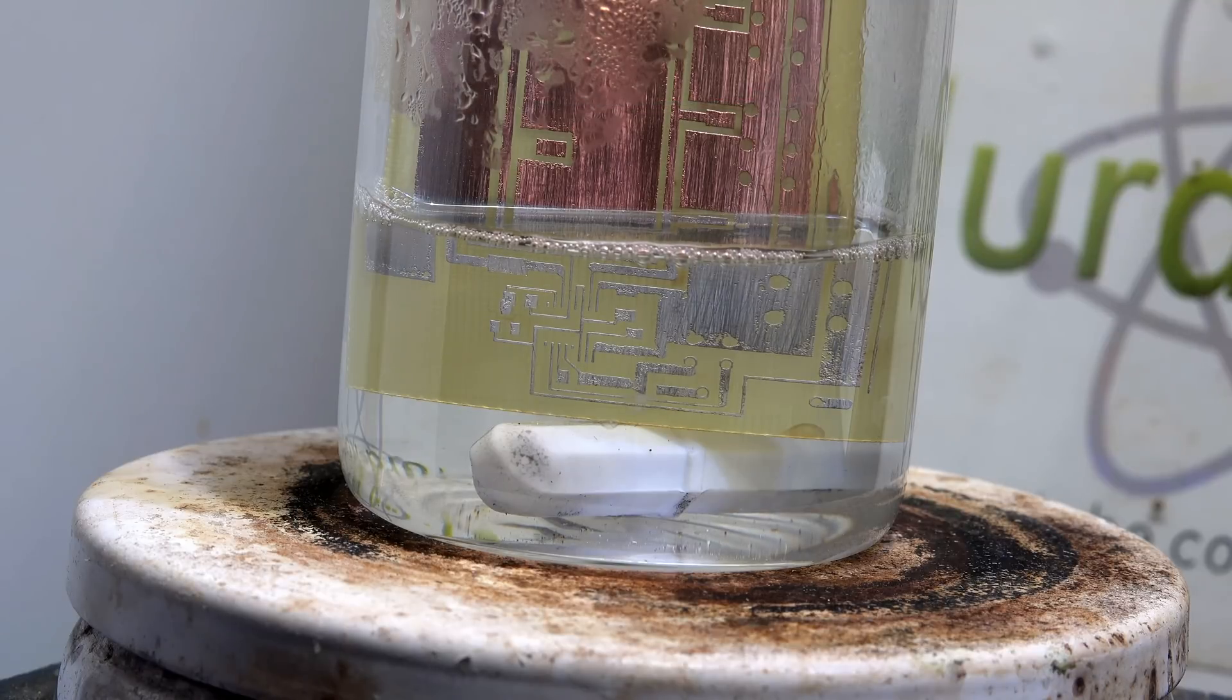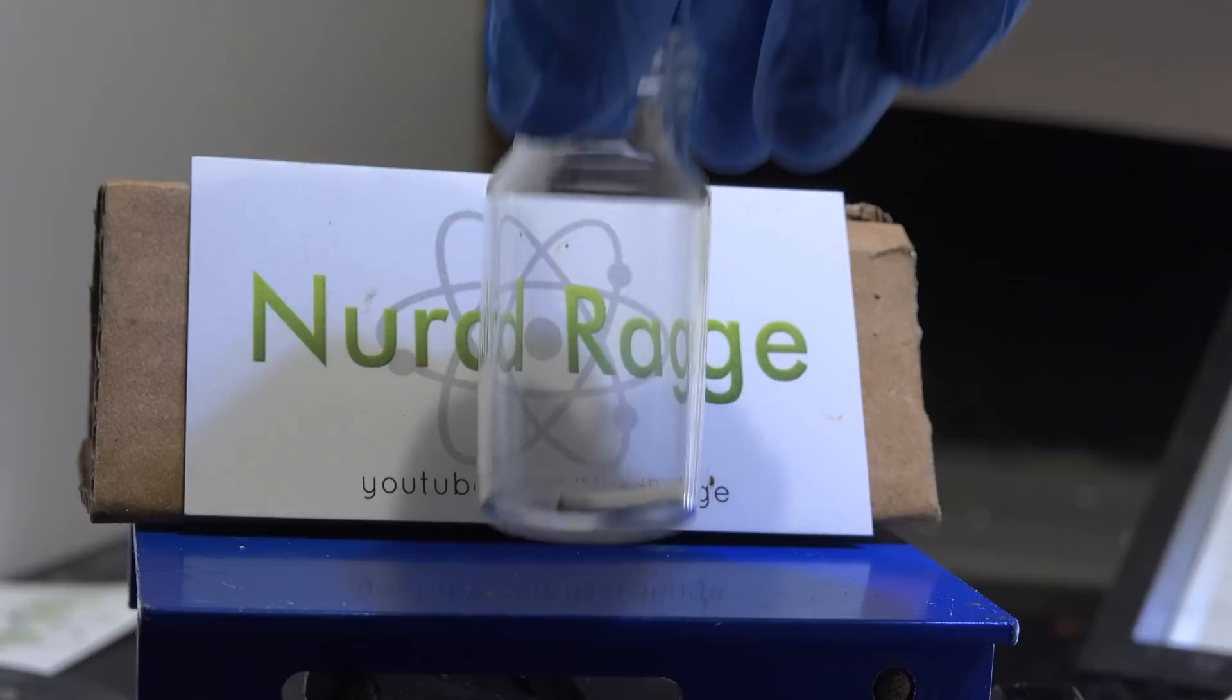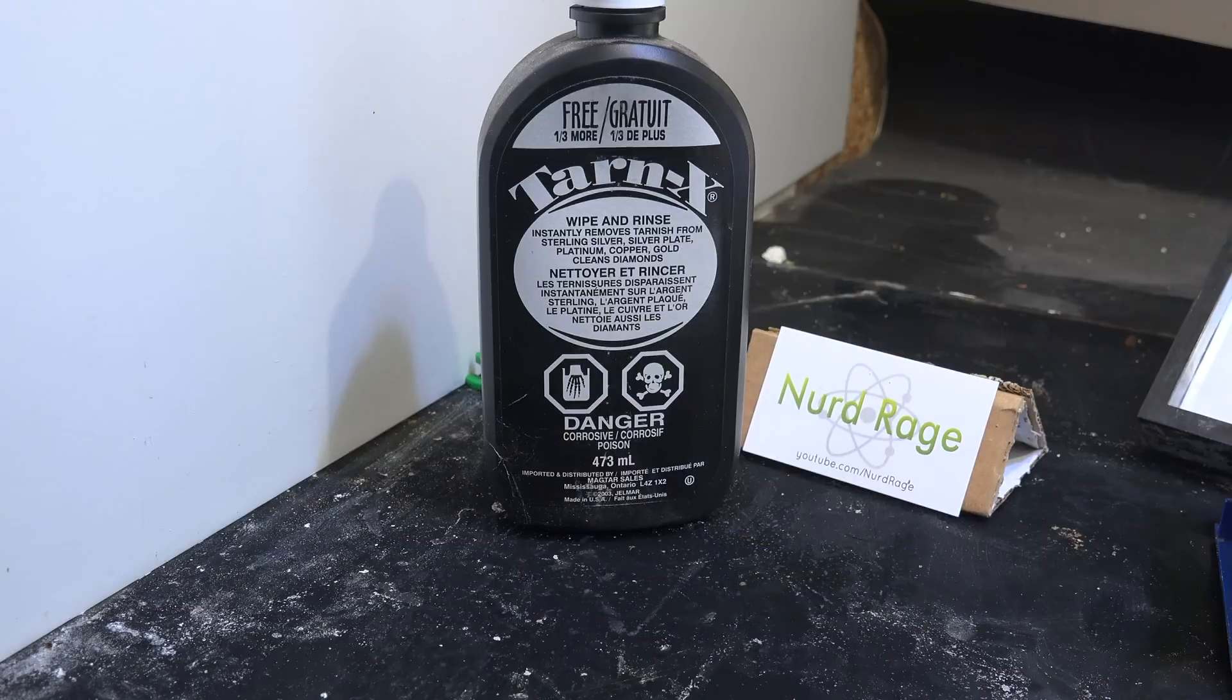Nonetheless these separate components seem to be usable even after prolonged storage. Tin and hydrochloric acid do not degrade in storage and this bottle of Tarn-X is six years old. Aging doesn't seem to harm this process.